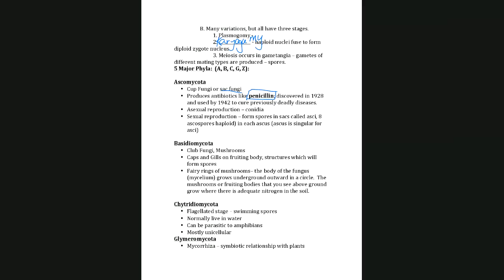When Ascomycota undergo asexual reproduction, they make structures called conidia — that's the type of spores they make asexually. When they reproduce sexually, they form spores in groups of eight in little sacs called asci. These are called ascus spores — ascus is the singular, asci is the plural. You viewed these in your fungus lab.